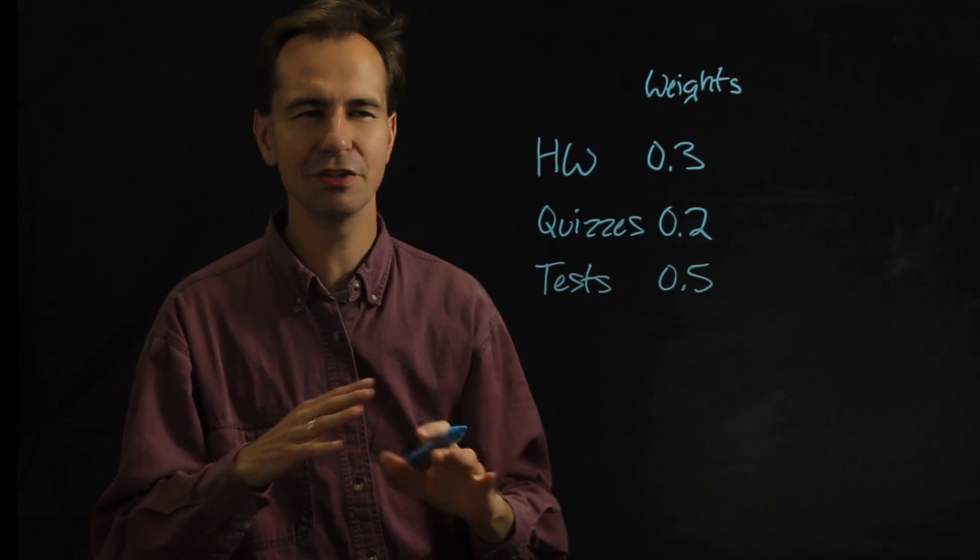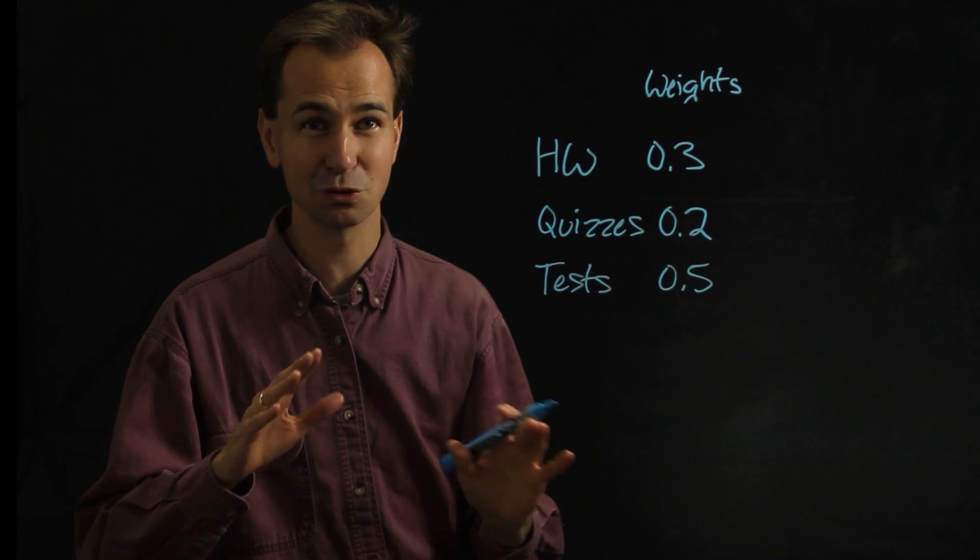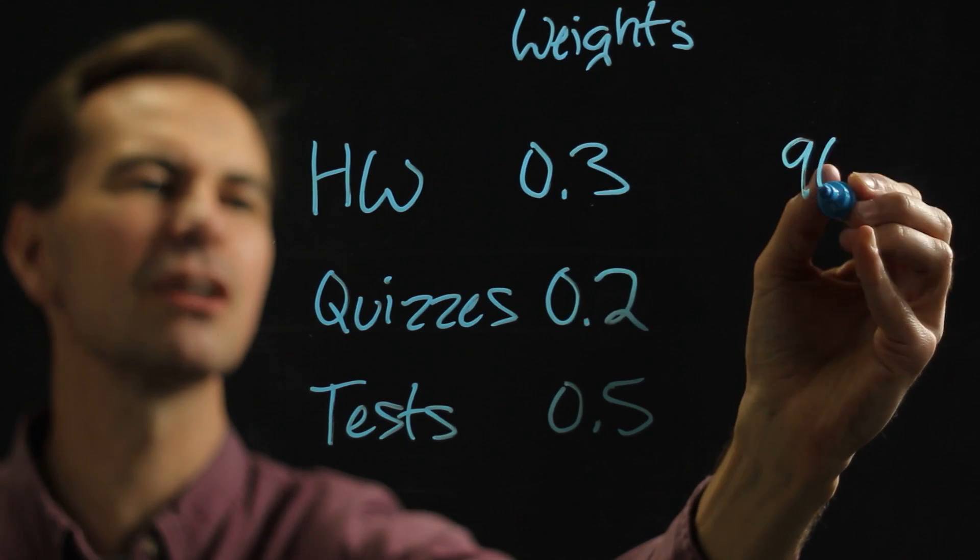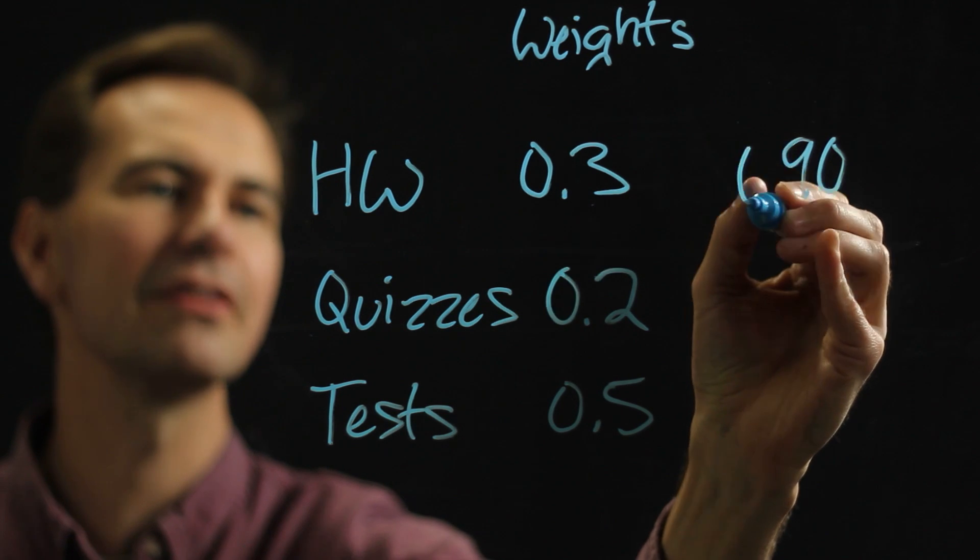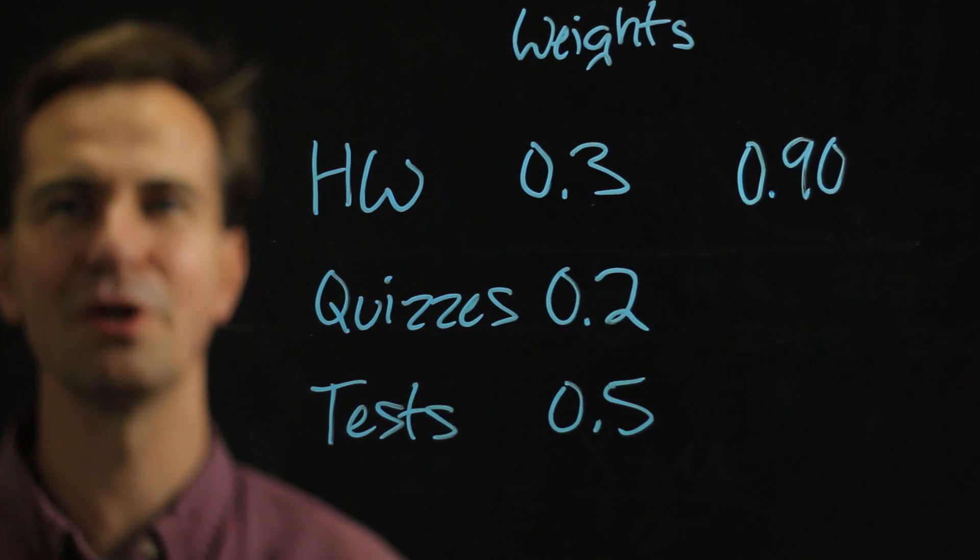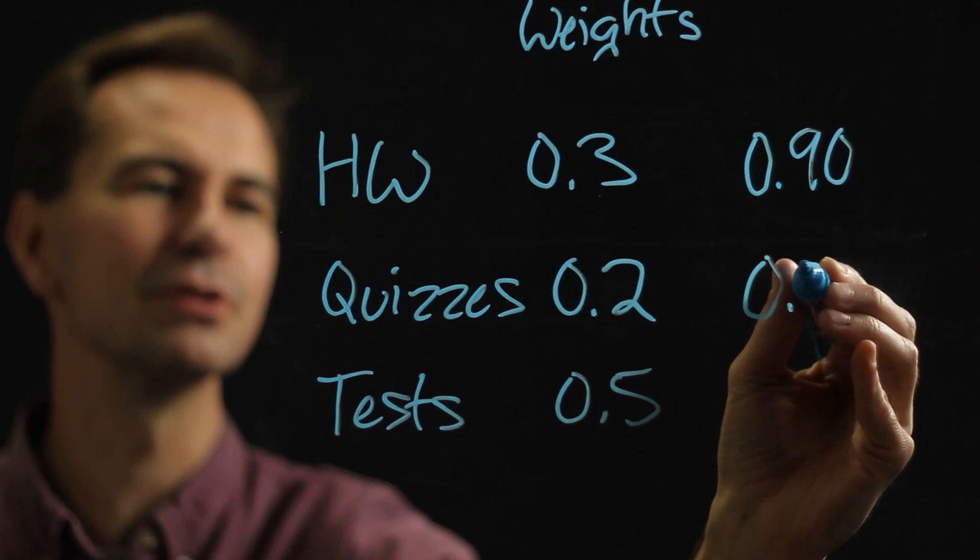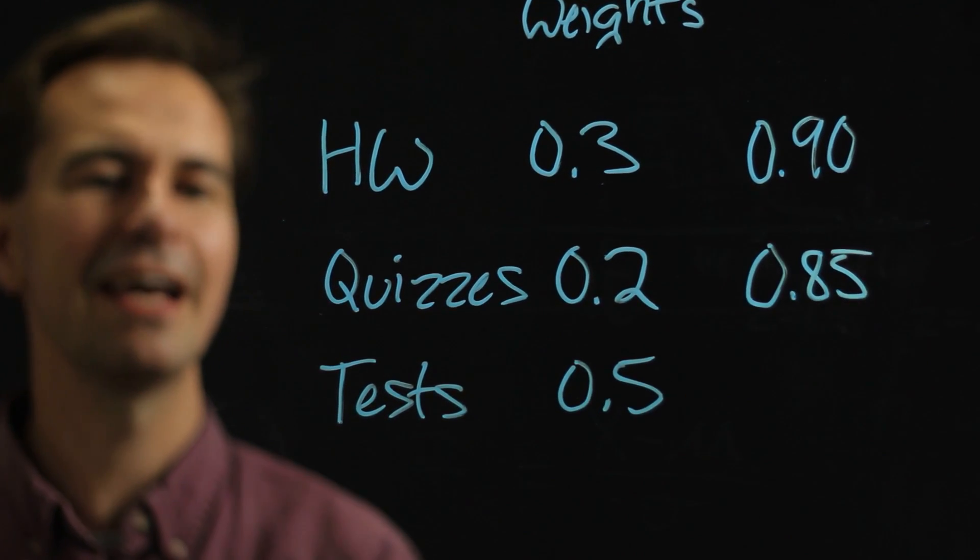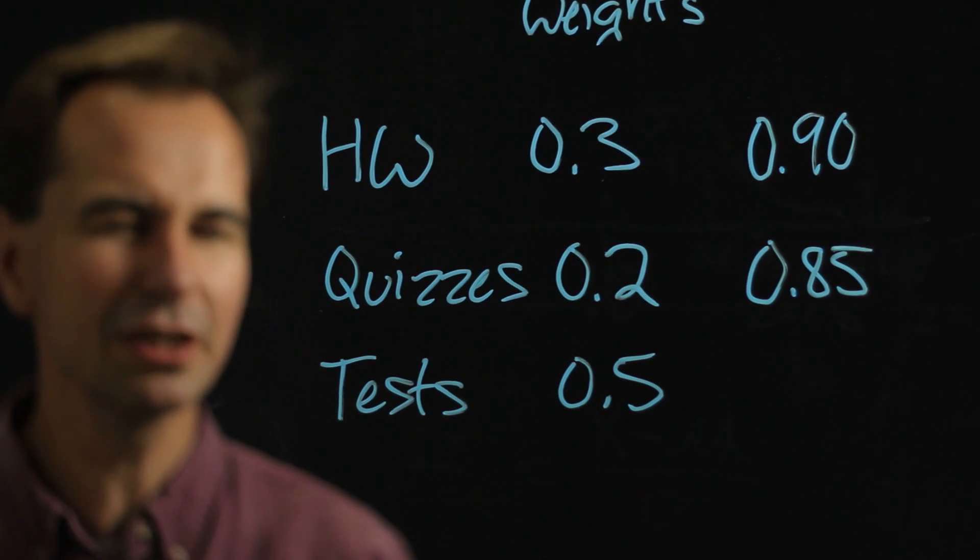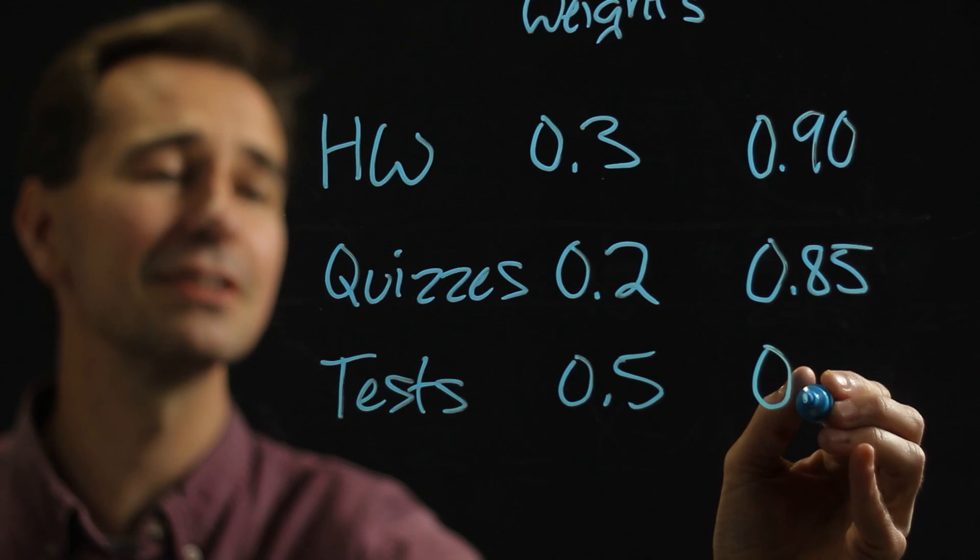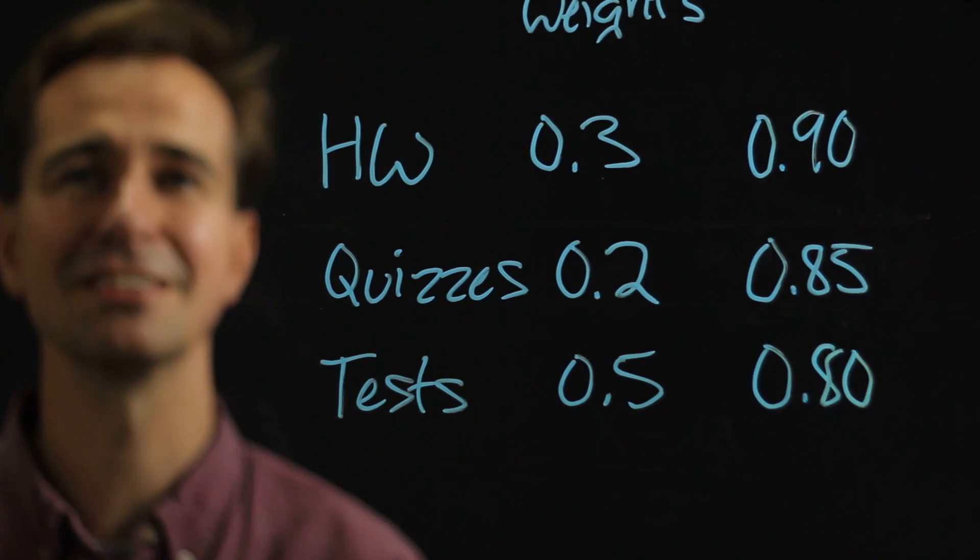Let's say that you figured out the average grade that you got on your homework and you got 90% on your homeworks. So let's write that as a decimal of 0.9. And then your quizzes you did pretty well on, let's say you got 85% on all of your quizzes. And your tests did pretty good, not quite as well, you know tests are harder. So let's say you got 80% on your tests.